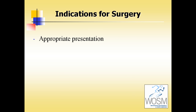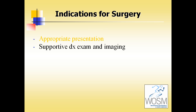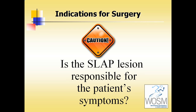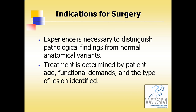Indications for surgical intervention include the appropriate clinical presentation — history, supportive diagnostic exam, and sometimes imaging — combined with failed non-operative treatment. It's often complicated by concomitant pathology. The key question the clinician must ask is whether the SLAP lesion is truly responsible for the patient's symptoms. Experience is necessary to distinguish pathologic findings from normal anatomic variants. Treatment is dependent upon the patient's age, functional demands, and the type of lesion identified.